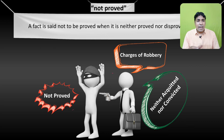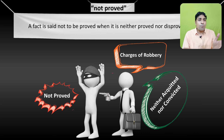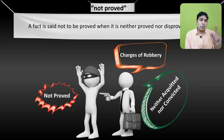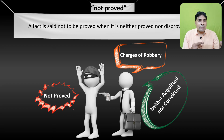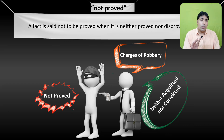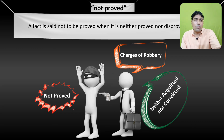Kabhi kabhi kya hota hai — kisi person pe charges lagaye jaate hain, aur charges lagaane ke baad jab police officer investigation karta hai, investigation ke dauran police officer ko us accused ke against mein koi bhi evidence nahi milta. To police officer discharge petition file karta hai, aur court accused ko discharge karta hai. Na to usko acquittal hua, na to conviction hua — to is situation mein the fact is not proved. Discharge hone ke baad, waapis se case reopen ho sakta hai.